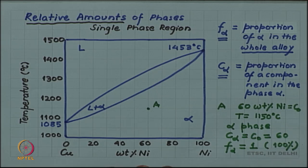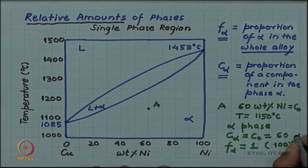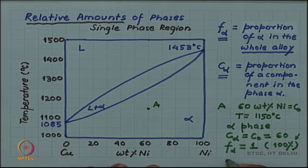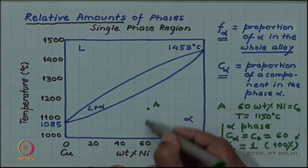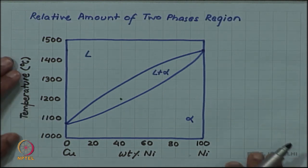We usually write the same symbol and do not use different symbols for fraction or percentage — percentage will always be written with the percentage symbol. For a single phase region, all three questions are very simple to answer: it is a single phase directly readable from the phase diagram, composition same as the alloy composition, and the fraction is 100 percent or 1 by mass balance.